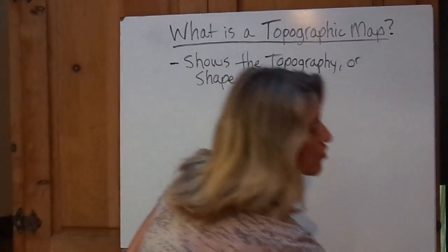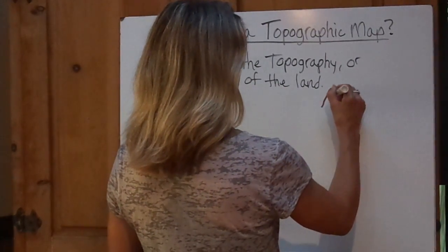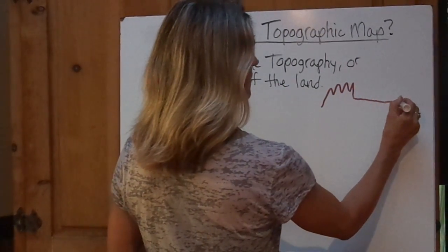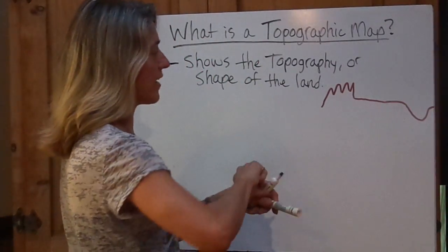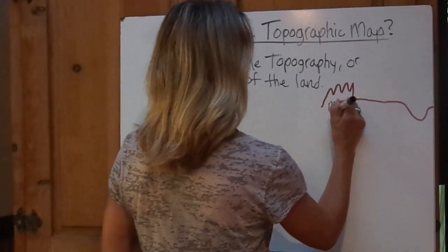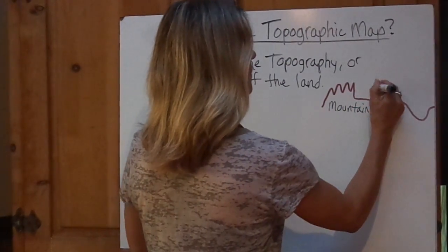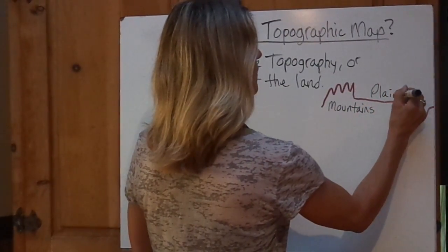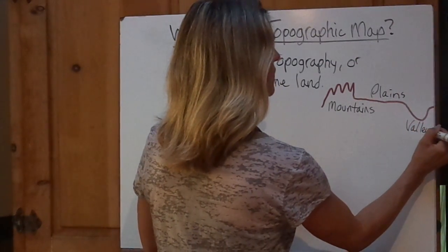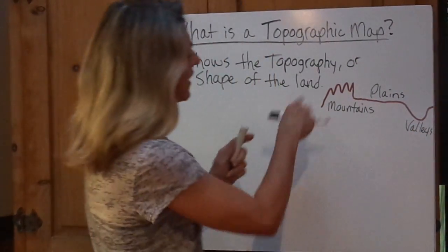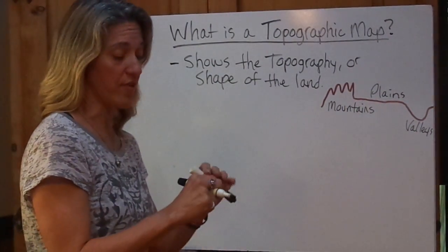Now remember, land features are things like mountains, plains, and valleys. Anytime you want to see the shape of the land, it can actually be shown on a topographic map.